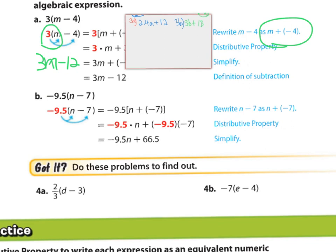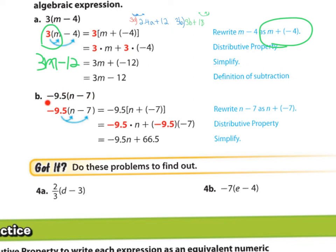Now we have a rational number on the outside that is negative: negative 9.5 times (n − 7). That gives negative 9.5 times n and negative 9.5 times negative 7. Rewrite it as n plus (negative 7), so when you have a negative times a negative, you get a positive — these two negatives cancel each other out and leave you with negative 9.5n plus 66.5.